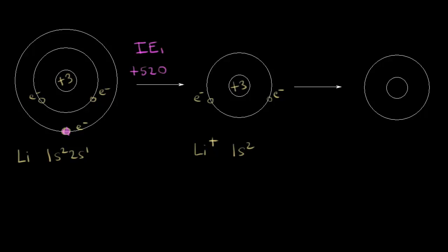We could keep going — apply more energy and pull away another electron. We're taking a second electron away, so we call this ionization energy two, because this is to take away the second electron. This value turns out to be approximately 7,298 kilojoules per mole.